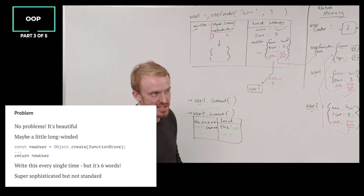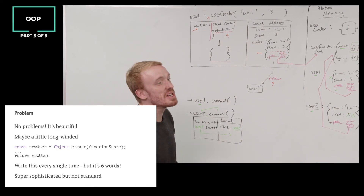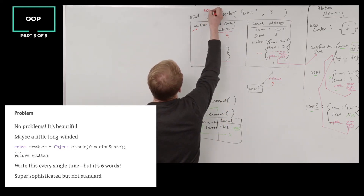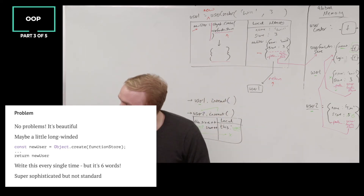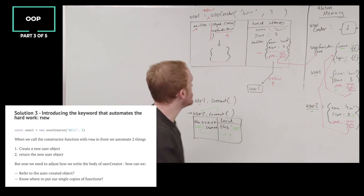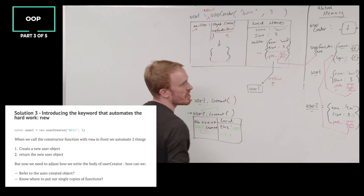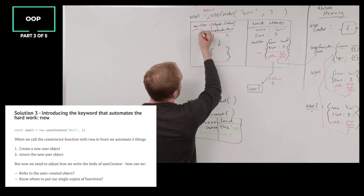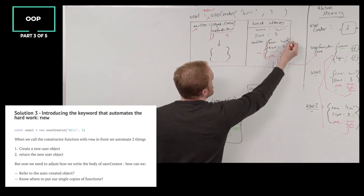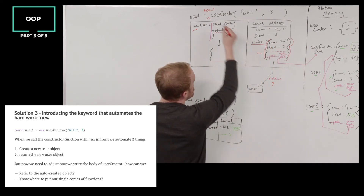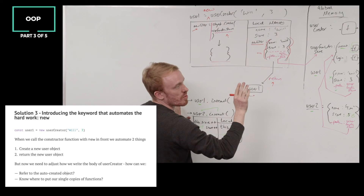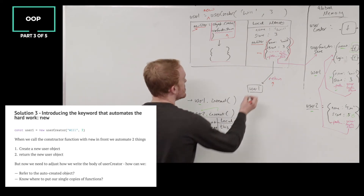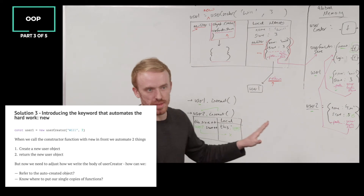What is that keyword? It's the new keyword. The new keyword is going to automate multiple things. The function that returns objects is called the constructor function. Inserting the new keyword is going to automate the creation of the new object — everything in red we don't have to write anymore. It's going to do all of this for us, and it's going to return the new user object. Everything is going to be handled for us automatically with the new keyword.